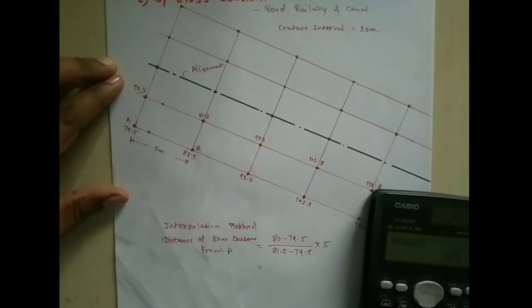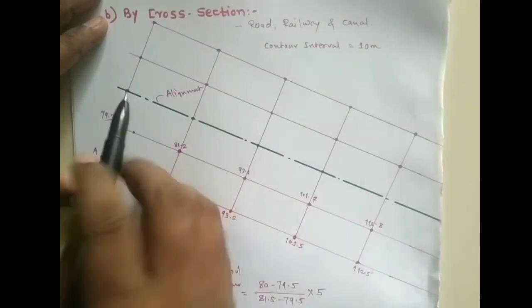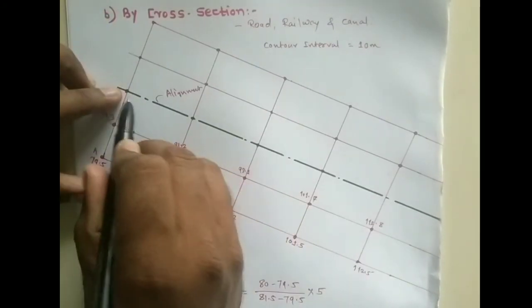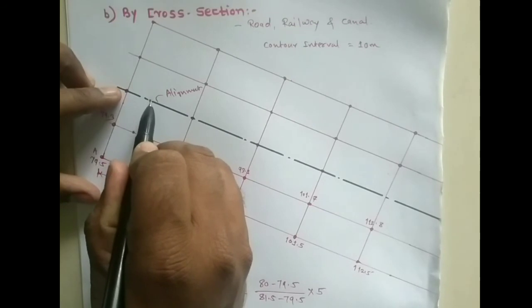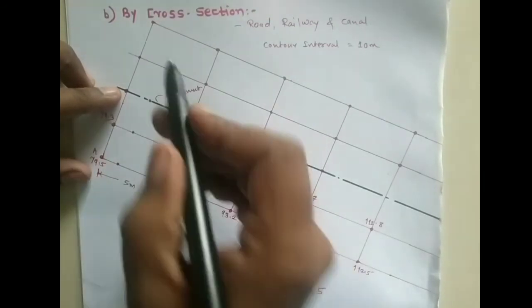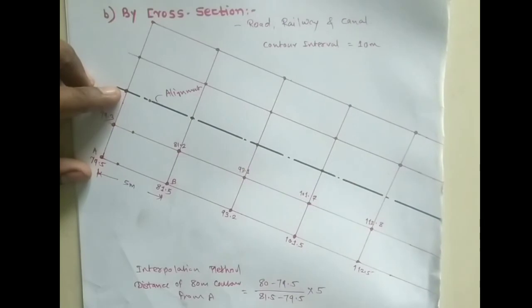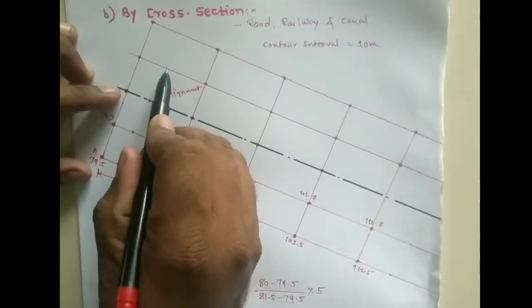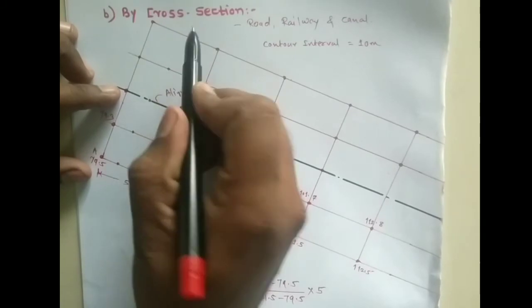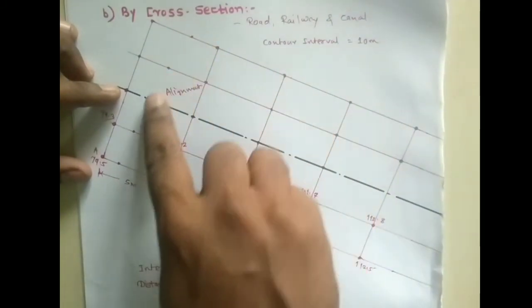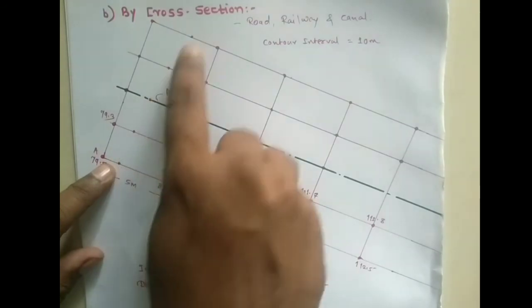So this is a particular point. Similarly, in both of these we can plot the contour, so here we have an approximate point. Similarly, we did the same calculations and here we have a distance. All these points that you are seeing indicate the 80-meter contour.